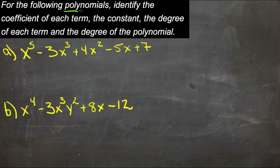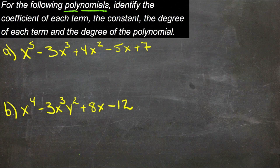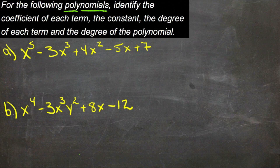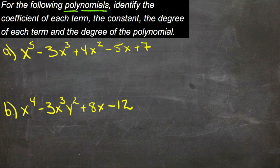The term polynomial means many terms, and it means that you have more than one term in a given expression. It also requires that each term in the expression have a positive power. So if anything has an x to the negative 1 or x to the negative 4 term or something similar, then it isn't part of a polynomial. But as long as everything has a positive power, you can have as many terms as you want.